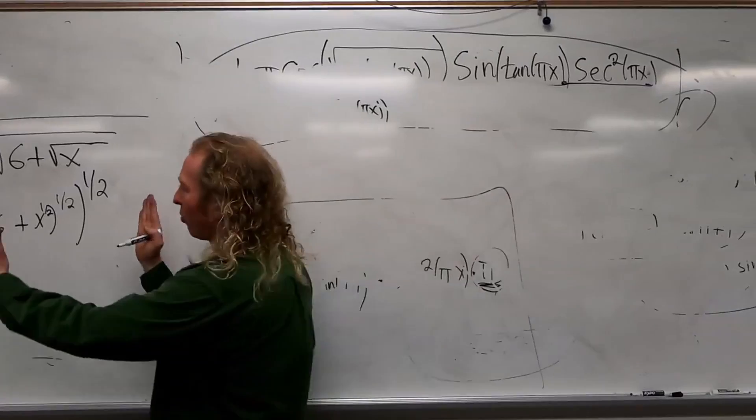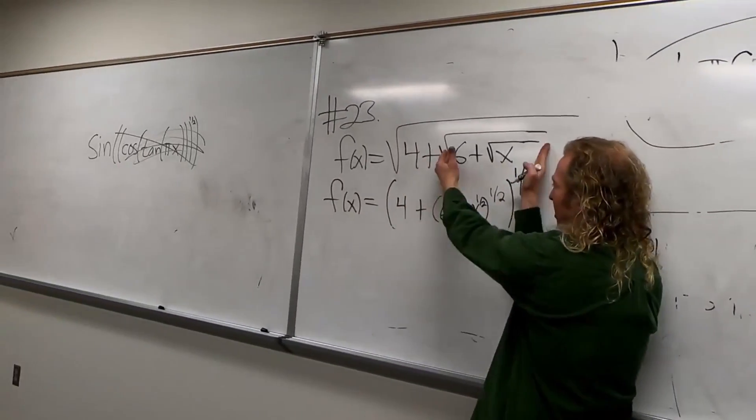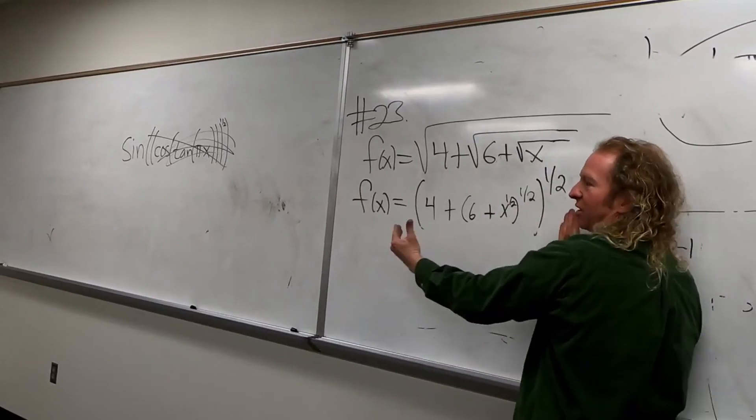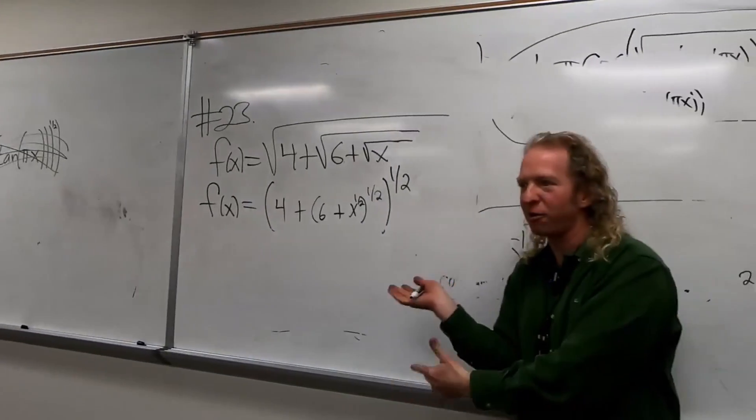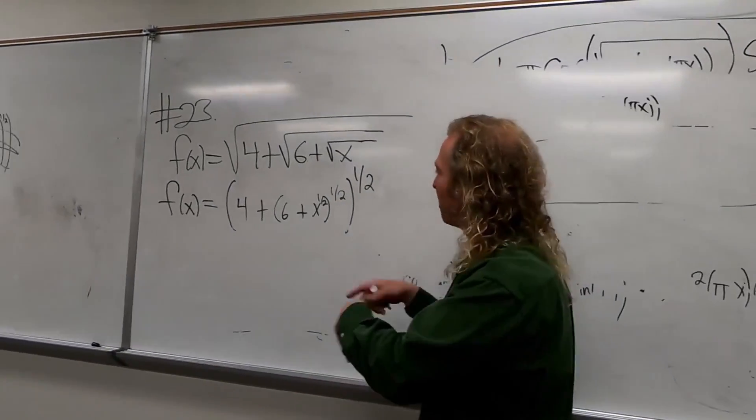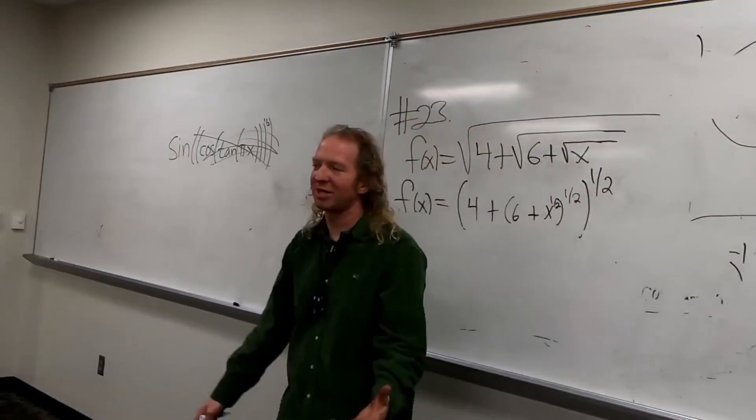So notice how I work from the outside in. I wrote the one-half down first. Four, the plus, this is this, and this is this. So that's the hardest part, I think, is the rewriting, in my opinion. At least, I have a harder time with that. I have an easier time with a derivative and a harder time with this step, for some reason. Maybe that's not common, I don't know.